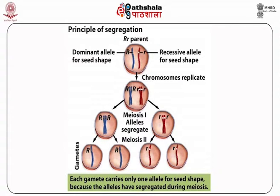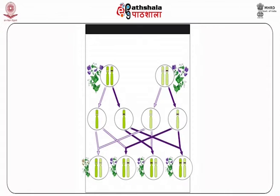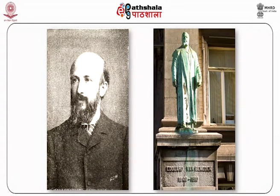The law of segregation states that every individual contains a pair of alleles for each particular trait which segregate or separate during cell division, and that each parent passes a randomly selected allele to its offspring. The offspring inherits its own pair of alleles by inheriting sets of homologous chromosomes from the parent organism. Interaction between alleles at a single locus is termed dominance, influencing how the offspring expresses that trait. The direct proof of this was found following the observation of meiosis by Oscar Hertwig and Edward van Beneden.